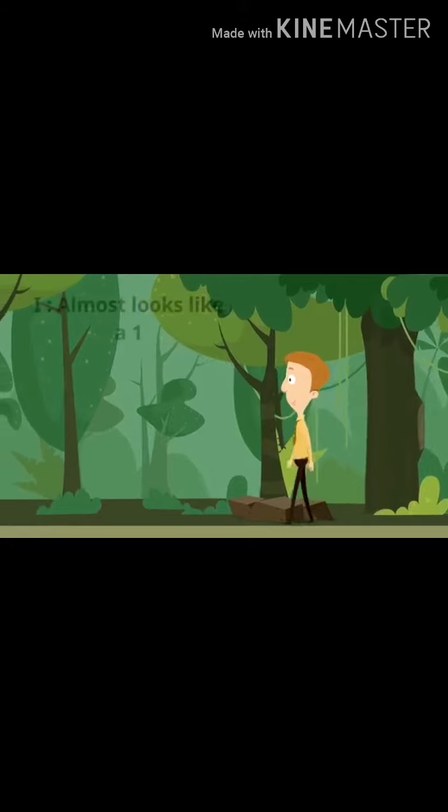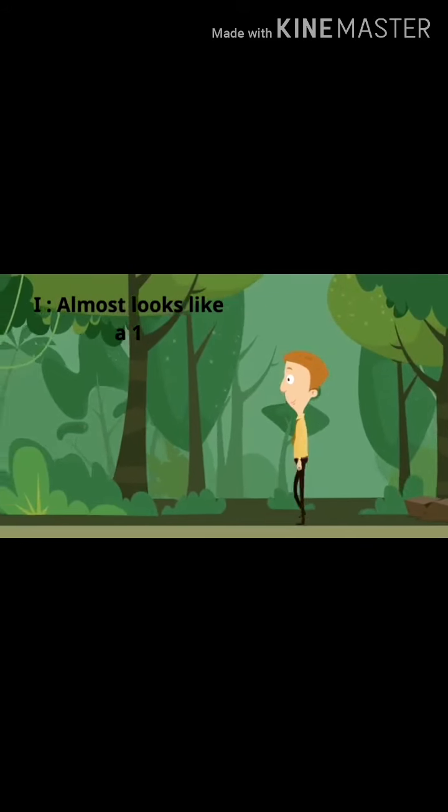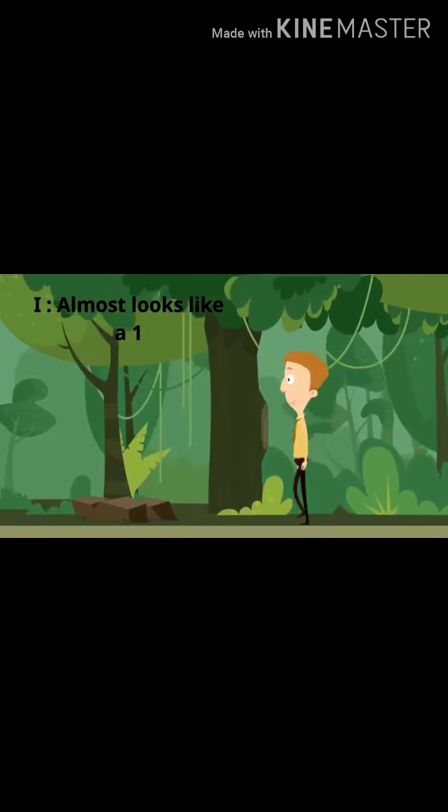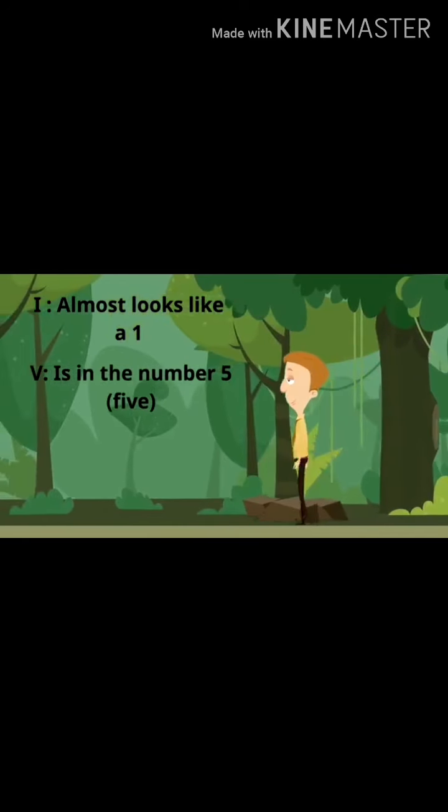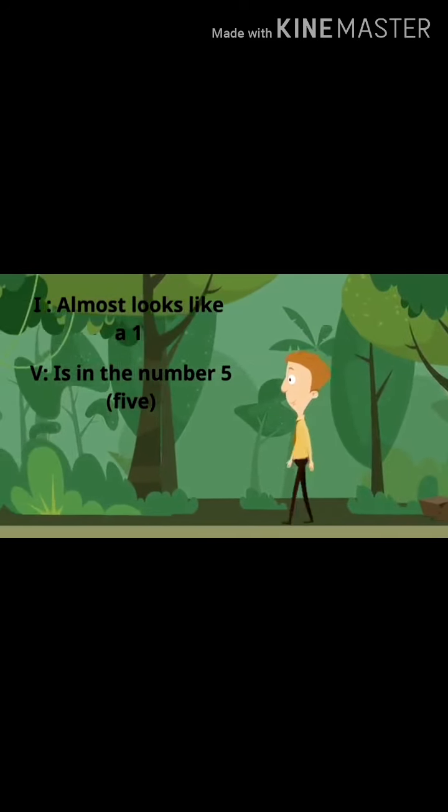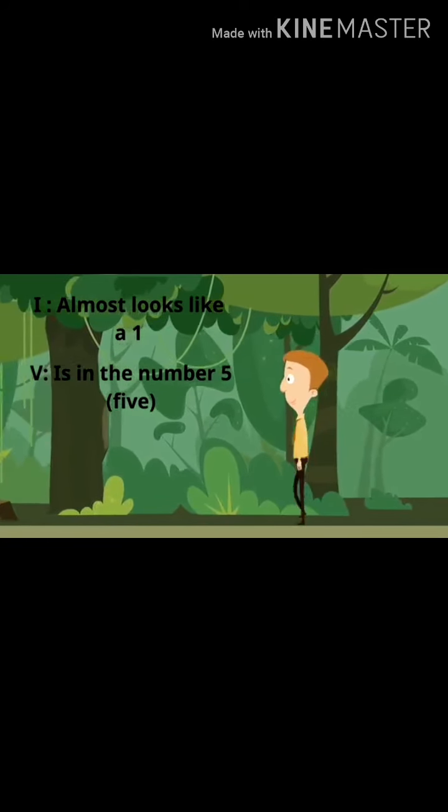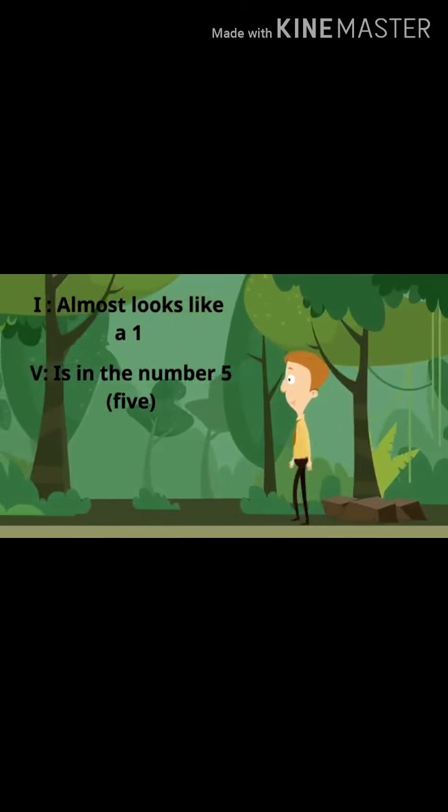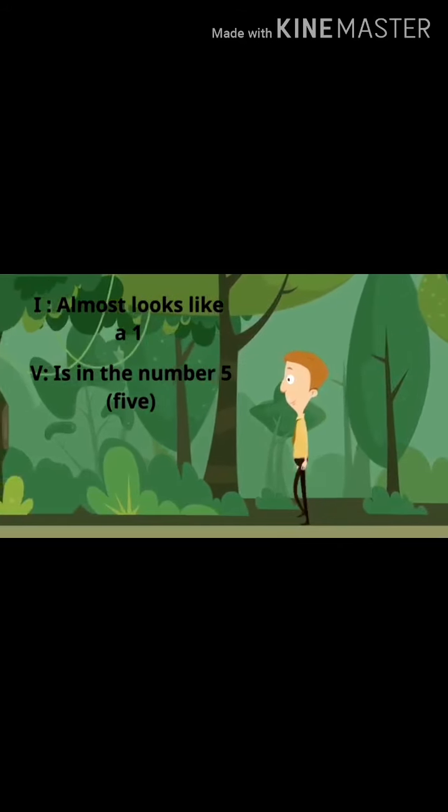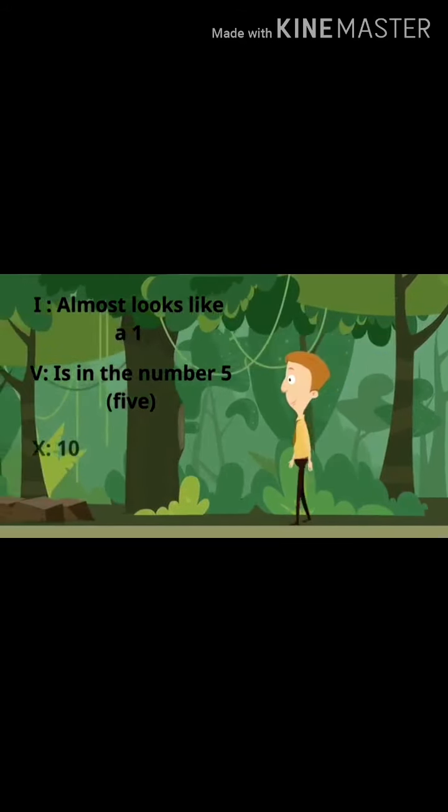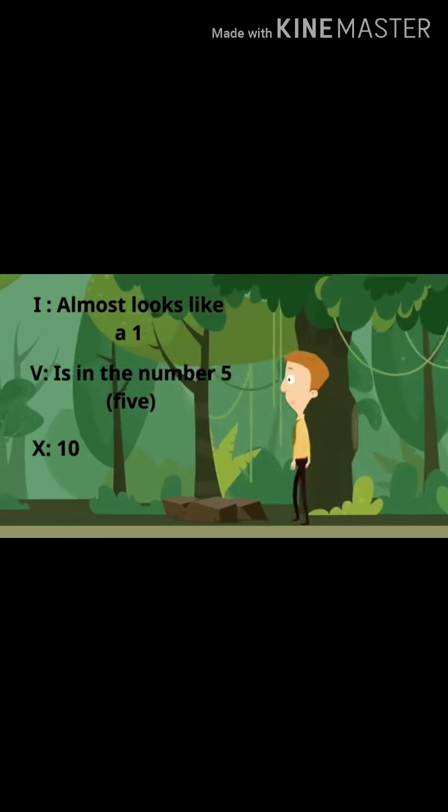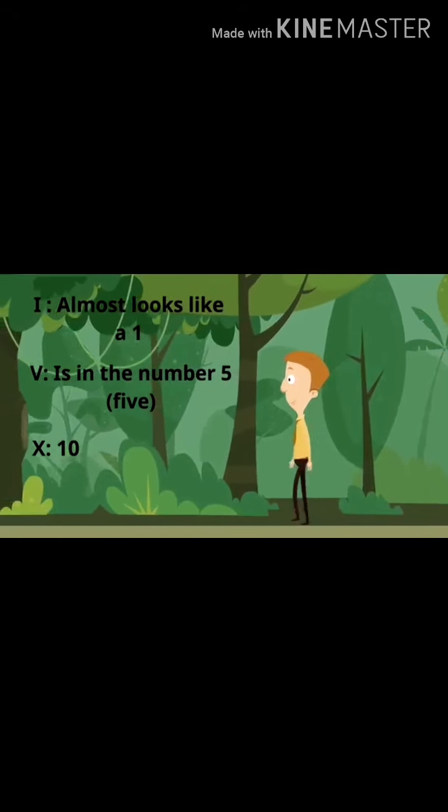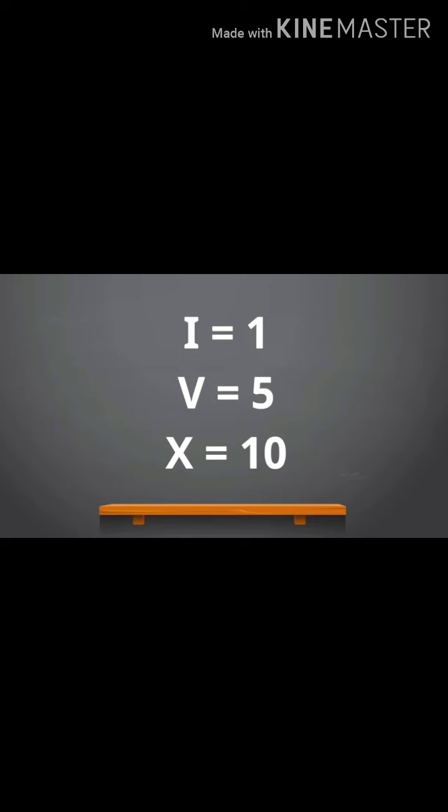So when you think one, it's an I. If you think five, it's a V, and if you think ten, it's an X. I almost looks like a one, that's how you can remember that I is the Roman numeral for one. A V is in the number five when you spell it out. You see that right there, it has a V in it. Now ten is X, and there is no memorization thing. When you see the X, it's ten.